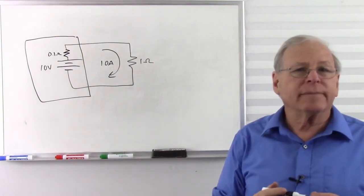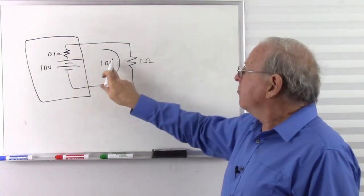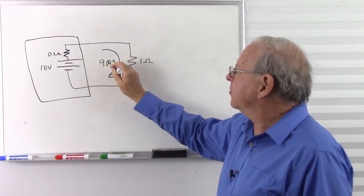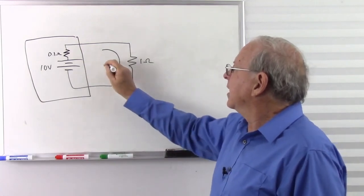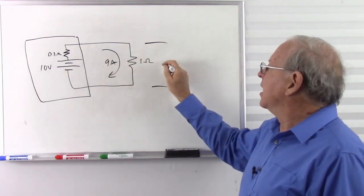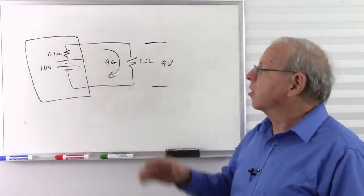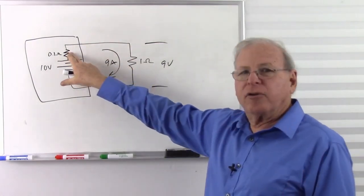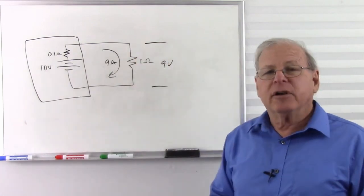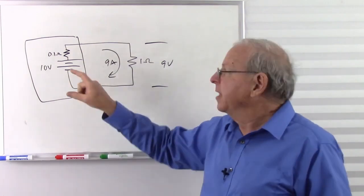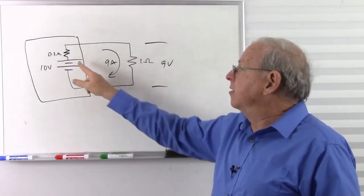So what are we really going to get out of this battery? I really have not one ohm of resistance but 1.1 ohms, so I'm actually going to get about 9.09 amps — basically about 9 amps instead of 10. And I'm really only going to get about 9 volts across that 1-ohm resistor with this particular battery. If I have a bigger battery, it's going to have less internal resistance and I'll get more current. The amount of current I can get out of that battery depends on that internal resistance.